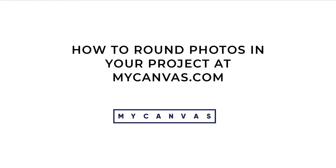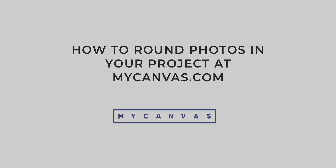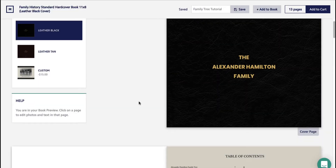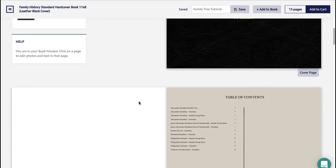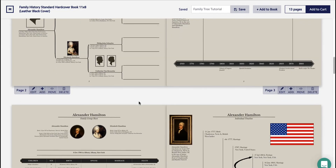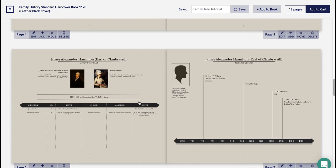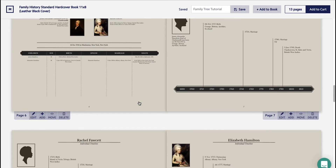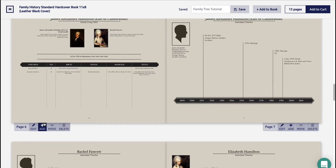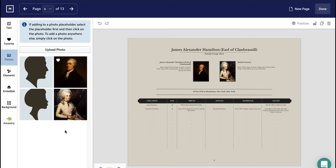In this tutorial, you'll learn how to round the edges of images and embellishments within your family history project. These edits can be made within all family history projects. Open your project and head to the page you'd like to edit. You may click on the page or choose the edit button underneath the page.